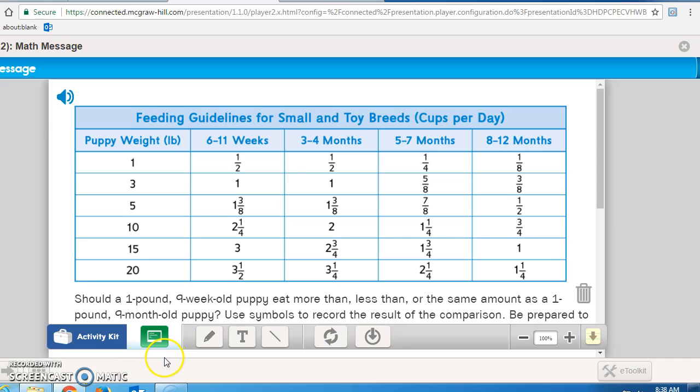Read this to yourself as I read it out loud. It says a manufacturer of dry puppy food offers the following feeding guidelines for small and toy breeds based on the age of the puppy. All food measurements are given in cups per day. Use the information in the table below to solve the number stories. Use drawings, tables, or equations to show what you did.